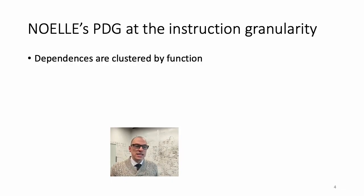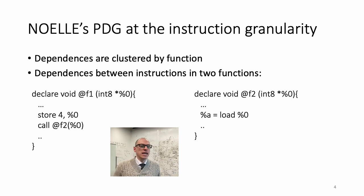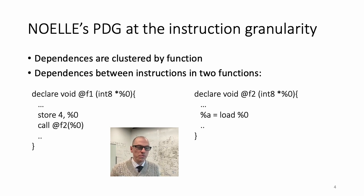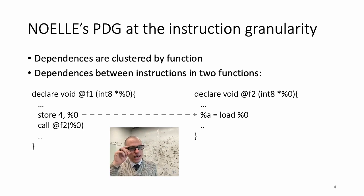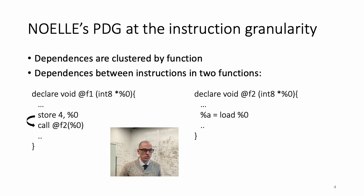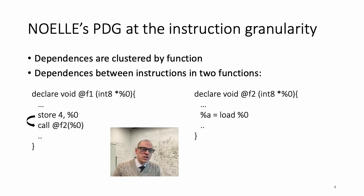The dependencies in the PDG provided by Noelle are clustered by function. What this means is that let's assume we have two functions, F1 and F2, and the store in F1 accesses the same memory location as the load in F2. Then you have a dependence from the store that writes the data to the load that reads it — but this dependence is not captured directly. Instead, it's captured by having a dependence from the store to the call to F2. That's what we mean by clustering dependencies by functions, and this decision is directly implied by the API of alias analysis that LLVM provides.